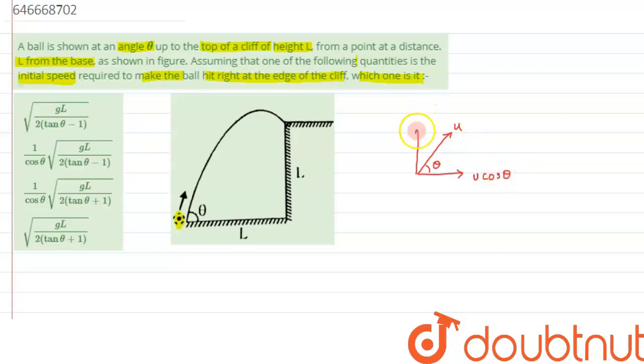And vertical velocity will be u sin theta. The best way to solve projectile problems is that we can individually imagine the motion along x and y axes. So from here we can say to cover a distance of this L along the horizontal direction, so we can say this velocity will be responsible, so we can write along horizontal...